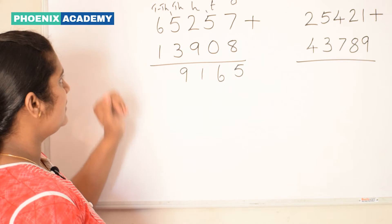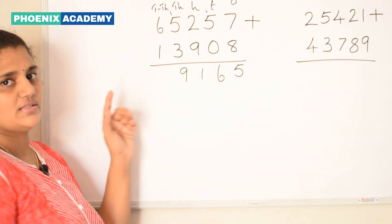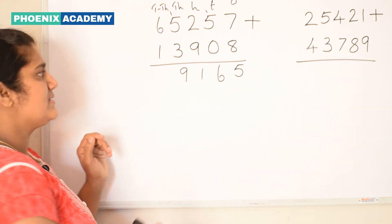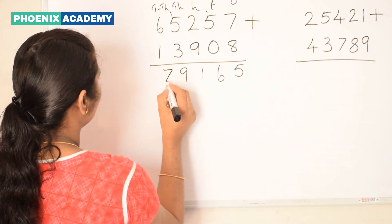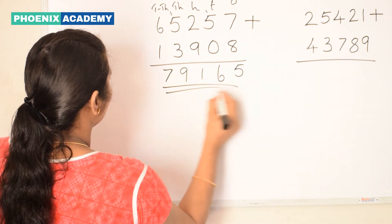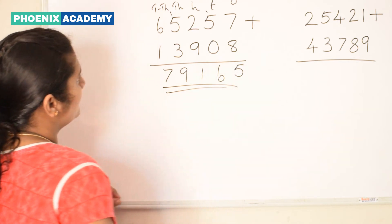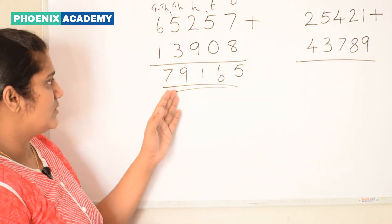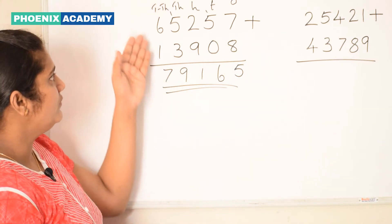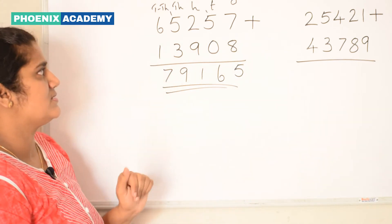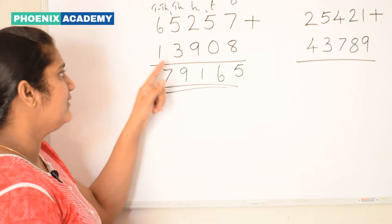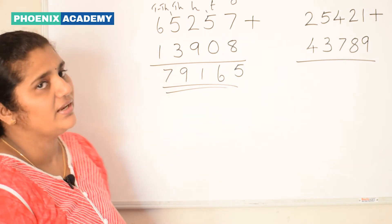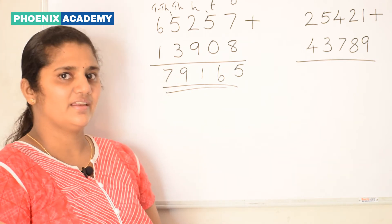Then we add the ten-thousands values: 6 plus 1 is 7. So this is the sum of 65,257 and 13,908.